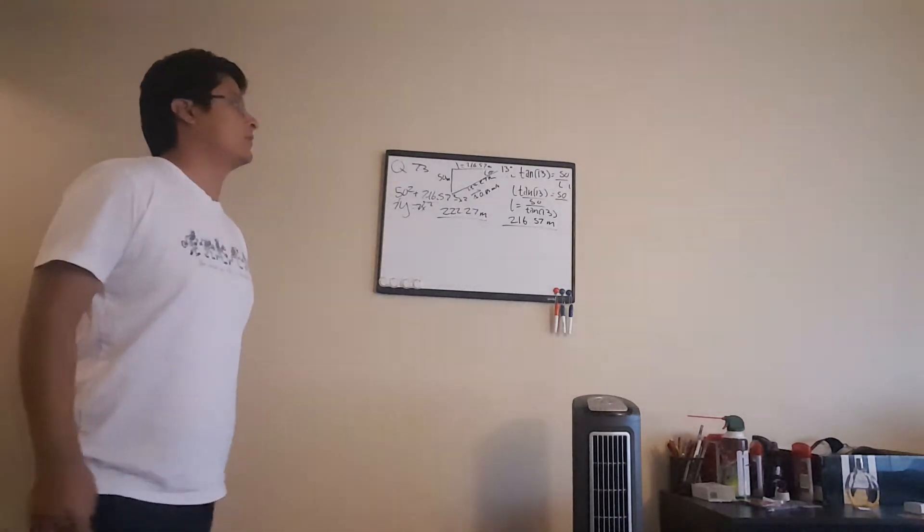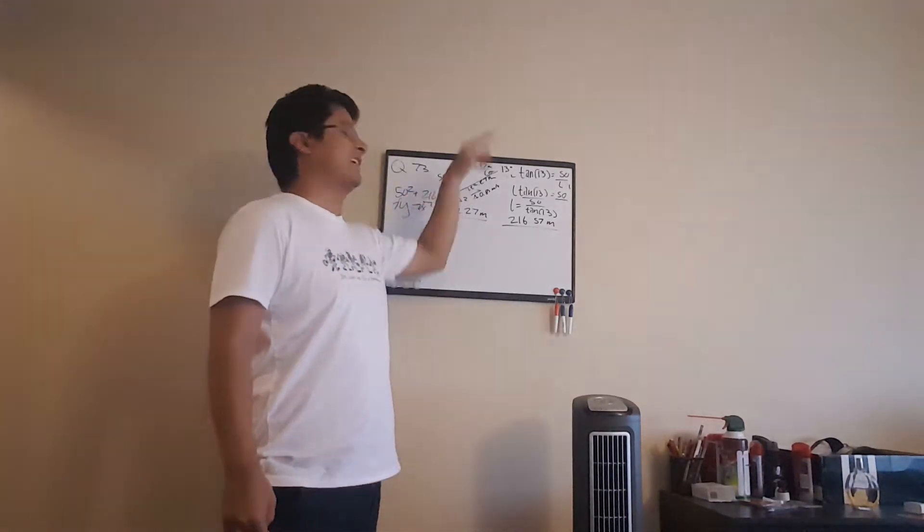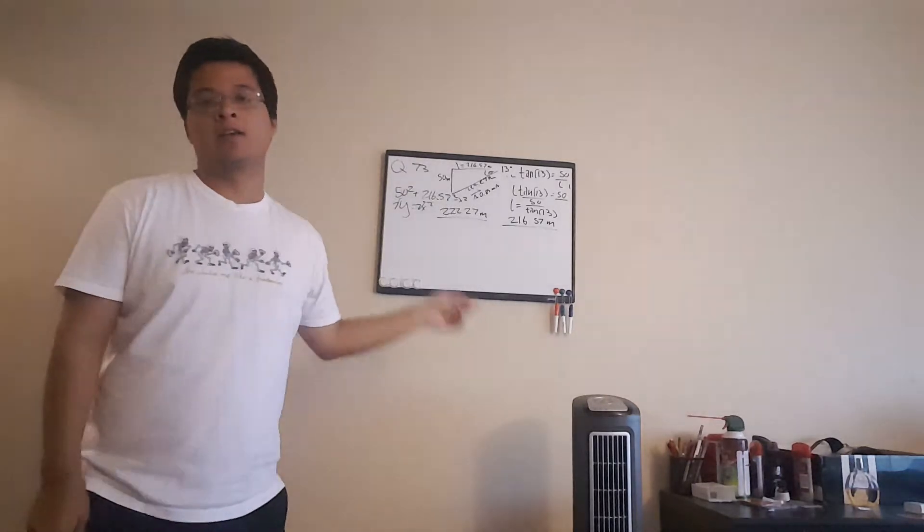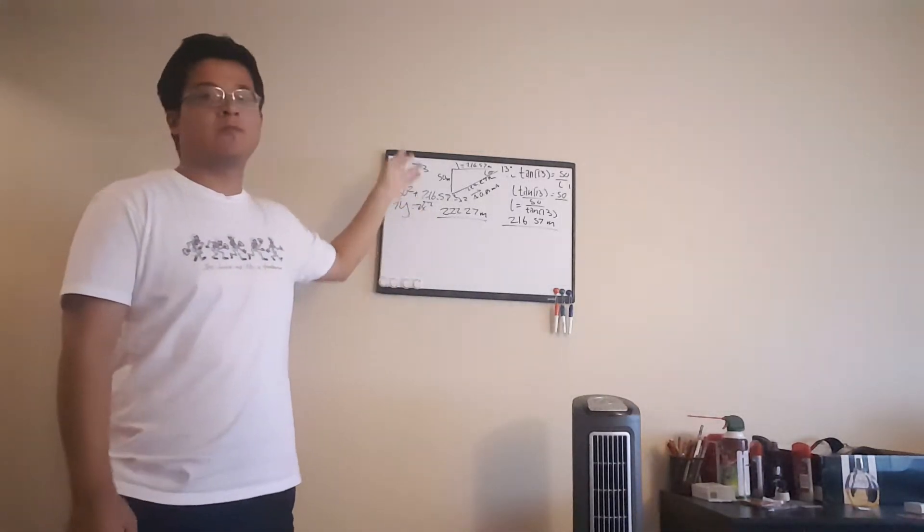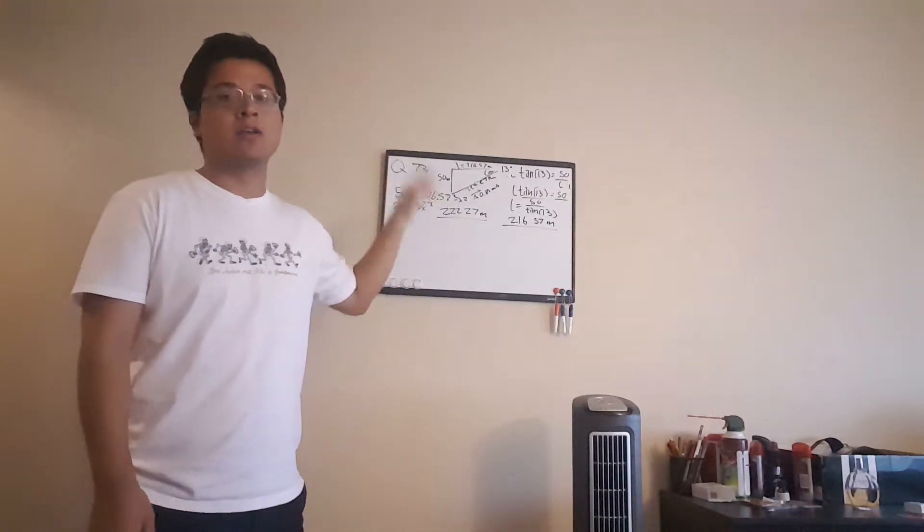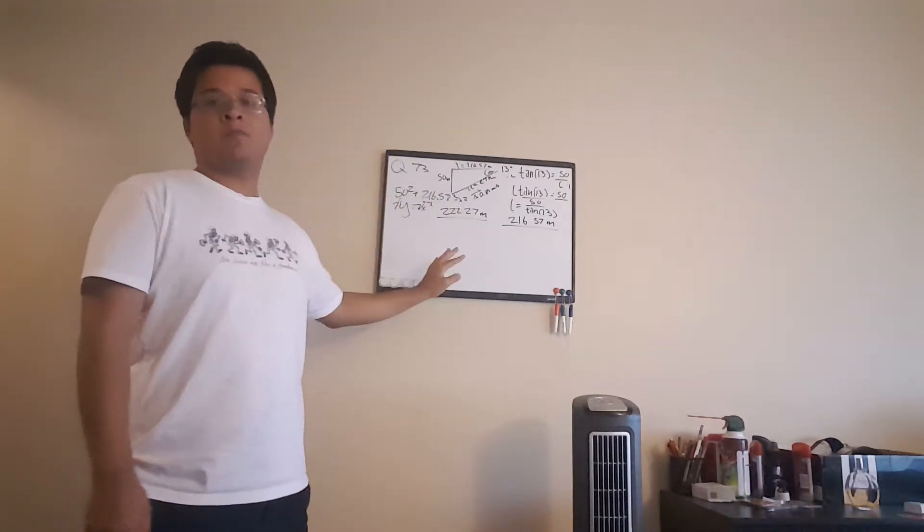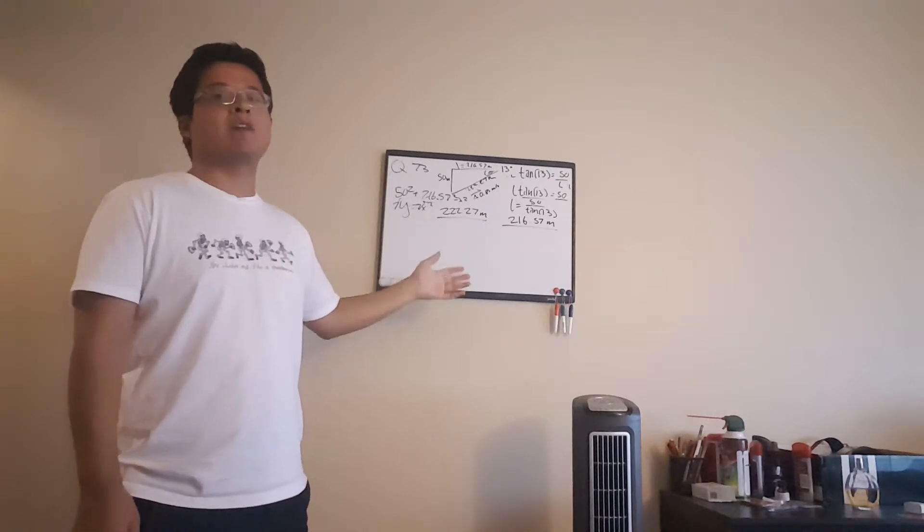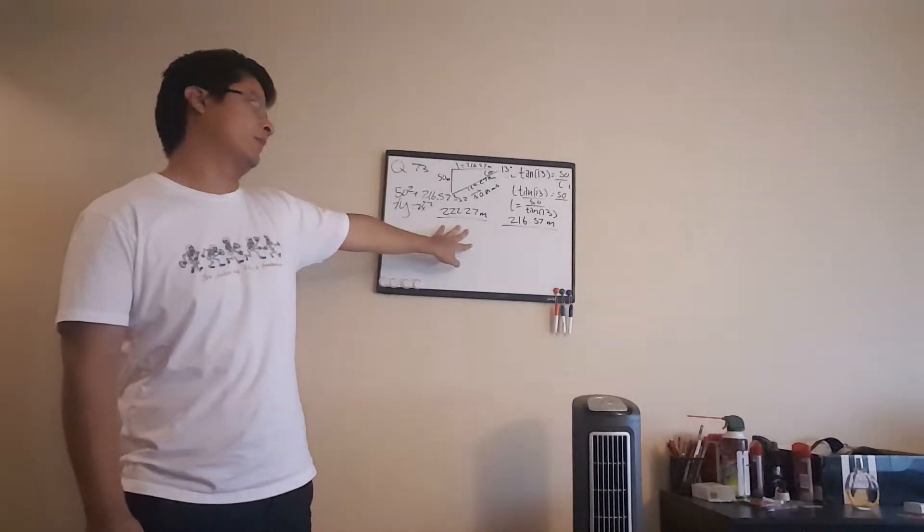After that, the question was what is the length of the hypotenuse in this case? All I did was 50 squared, 216 point whatever squared, equals x squared. That gave us some number, and taking the square root of that number gives us 222.27 meters.